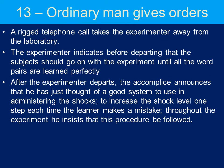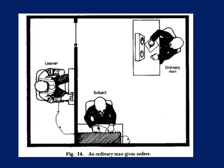A telephone call happens and the experimenter has to leave the lab. The experimenter indicates before departing that the subject should go ahead with the experiment until all of the word pairs are learned perfectly. As the experimenter leaves, one of the confederates announces he's just had a really good idea: that they should increase the shocks by 15 volts every time the learner gets a question wrong. So instead of the experimenter, the ordinary man sits where the experimenter would sit and dictates the instructions, coming up with this idea to increase by 15 volts every time.